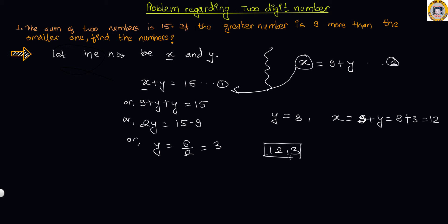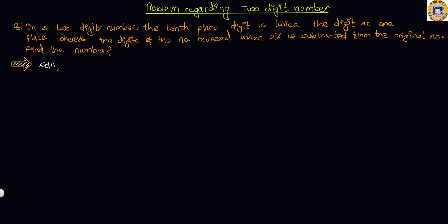Now let us see a relatively tougher example regarding two-digit number problems. In this problem, in a two-digit number, the tens place digit is twice the digit at the ones place, whereas the digits of the number reverse when 27 is subtracted from the original number. Find the original number.